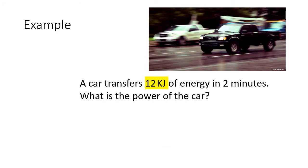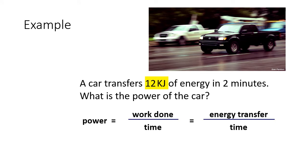Here is another example — pause the video and carefully check the units before calculating power using the equation. To get the correct answer: 12 kilojoules means 12,000 joules, and 2 minutes means 120 seconds. So the answer is 100 watts.